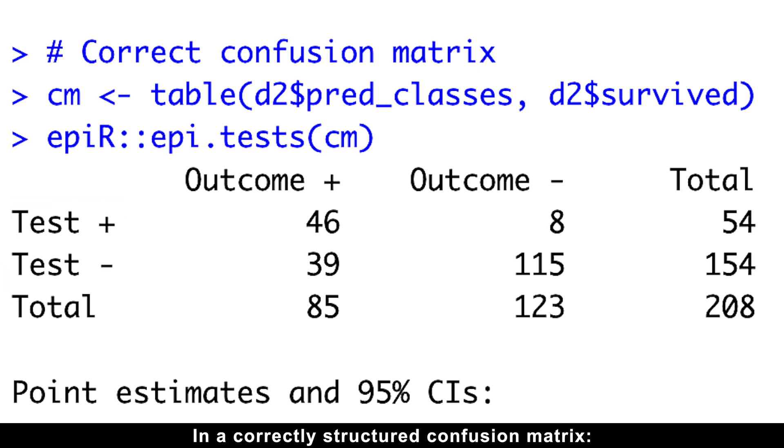In a correctly structured confusion matrix, the diagonal from the upper left to lower right shows correctly classified values, namely true positives and true negatives. The diagonal from the upper right to lower left shows misclassified values, namely false positives and false negatives.